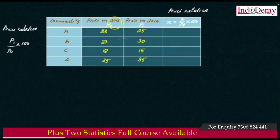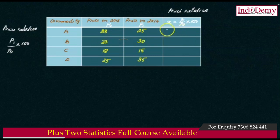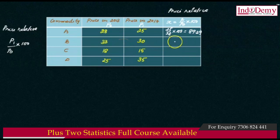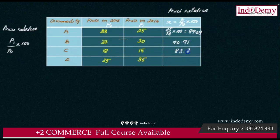For commodity A: 25 divided by 28 into 100 gives 89.29. Next, 30 divided by 33 into 100 gives 90.91. Next, 15 divided by 18 into 100 gives 83.33. Then 35 divided by 25 into 100 gives 140.